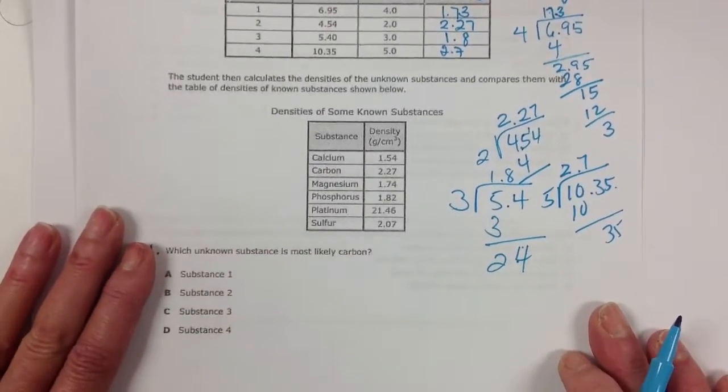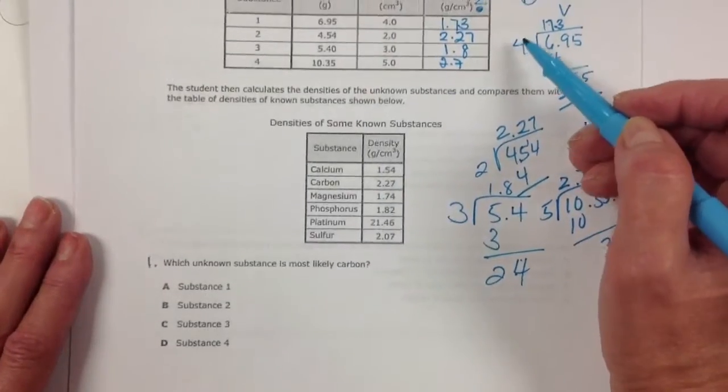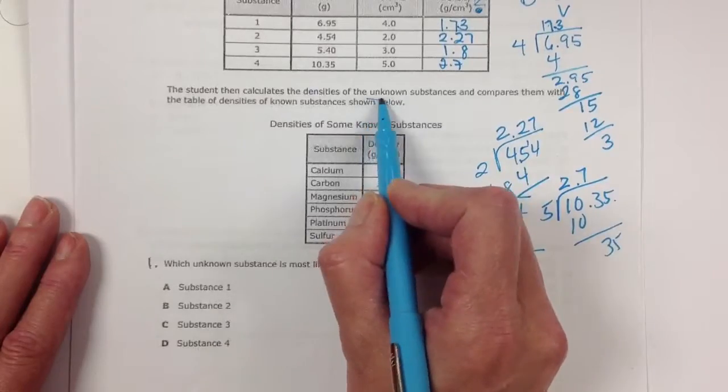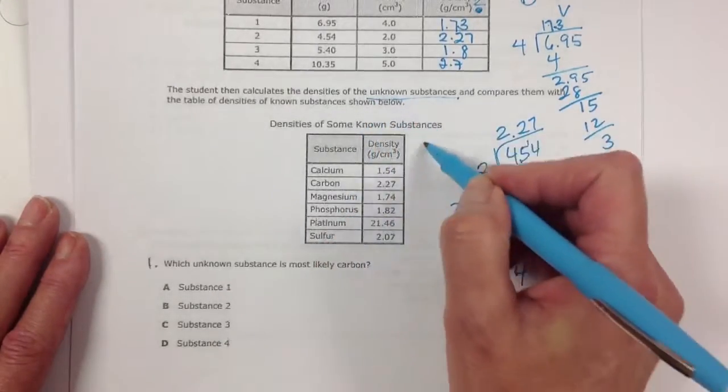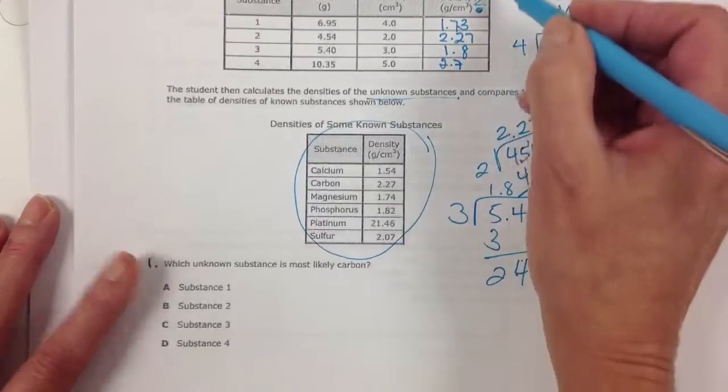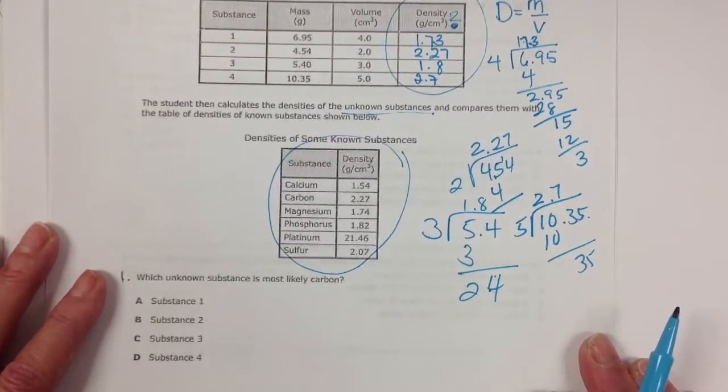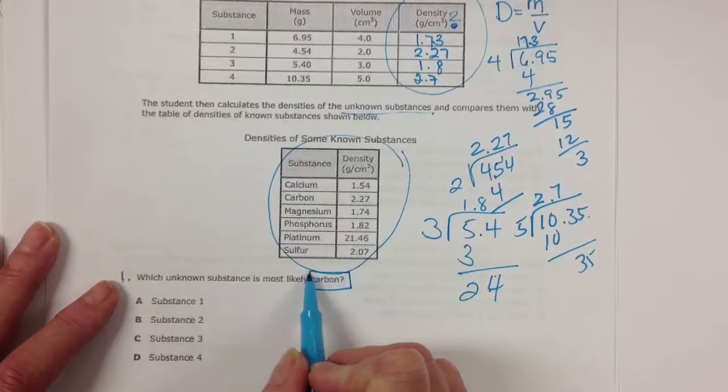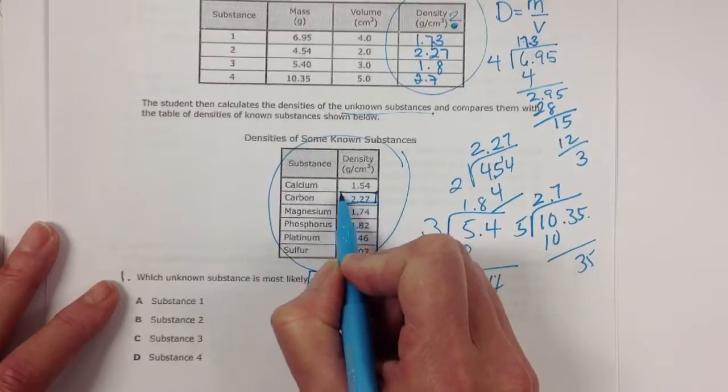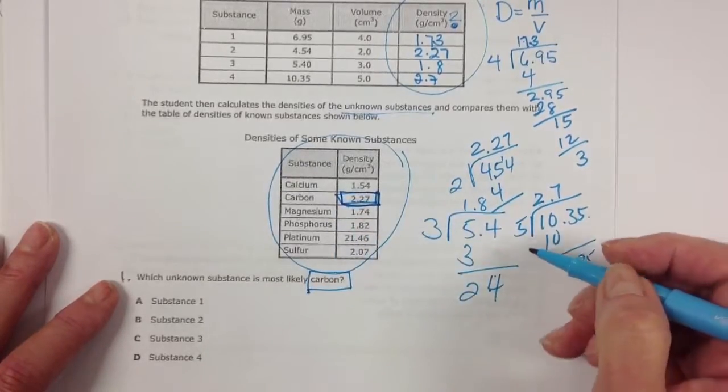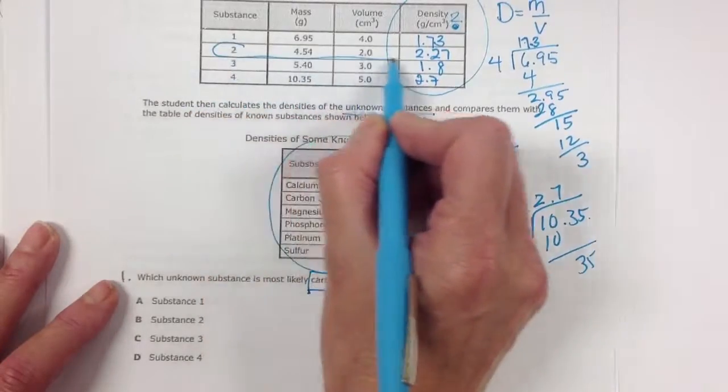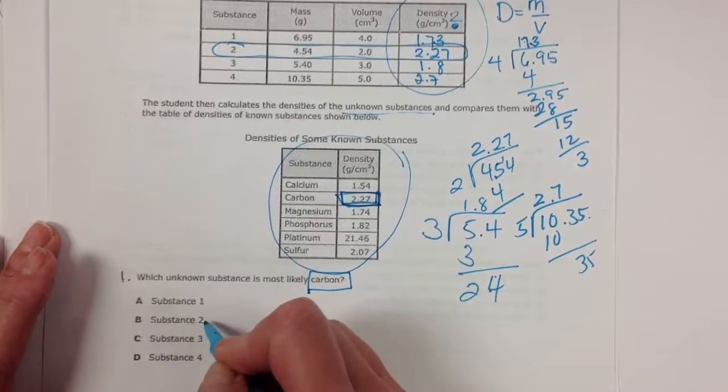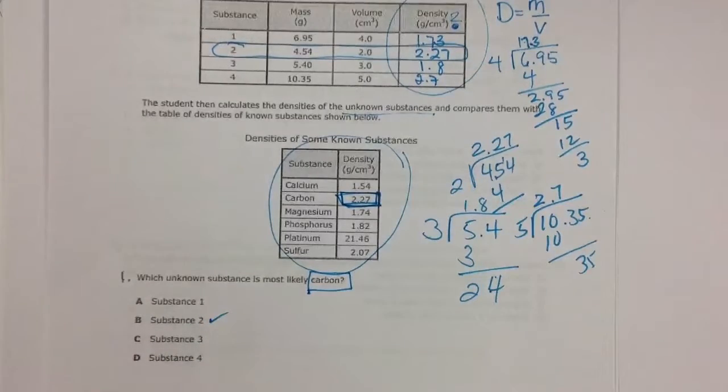So here we have our density that we've calculated. And we're trying to identify unknown substances. And we're comparing them with some known substances. So here were our unknowns. Here are our knowns. So we're wanting to know which unknown substance is most likely carbon. If I look to find the density of carbon, it's 2.27. Well, I came up with exactly that number for substance number 2. So substance number 2 must be carbon.